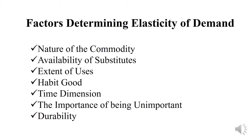The third factor is extent of usage. Some commodities can be used for a variety of purposes. For example, electricity — if the price per unit of electricity consumed falls, people will reduce their consumption of substitutes such as coal and gas, and increase their consumption of electricity.